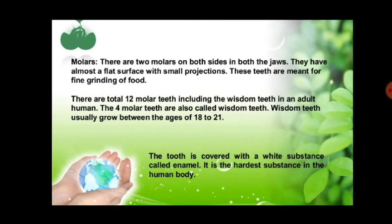Then we are having molars. There are 2 molars on each side of both the jaws. They have almost a flat surface with small projections and are meant for fine grinding of the food. While premolars and molars are both involved in grinding and chewing, molars specifically perform very fine grinding. There are a total of 12 molar teeth including the wisdom teeth in an adult human. The 4 molar teeth that are the wisdom teeth usually grow after the age of 18.